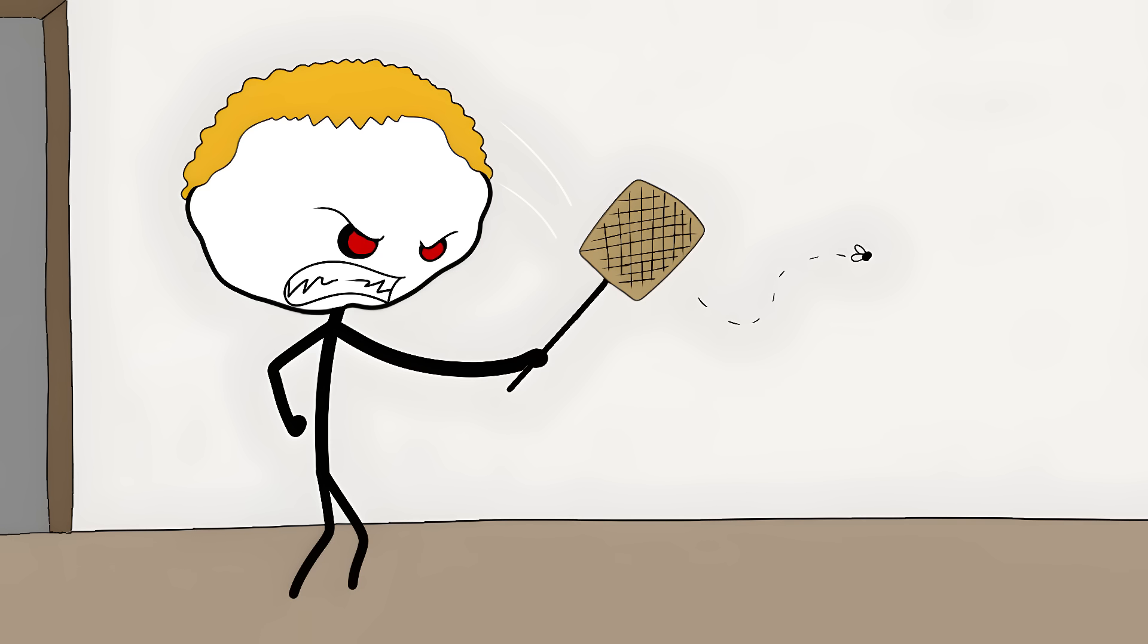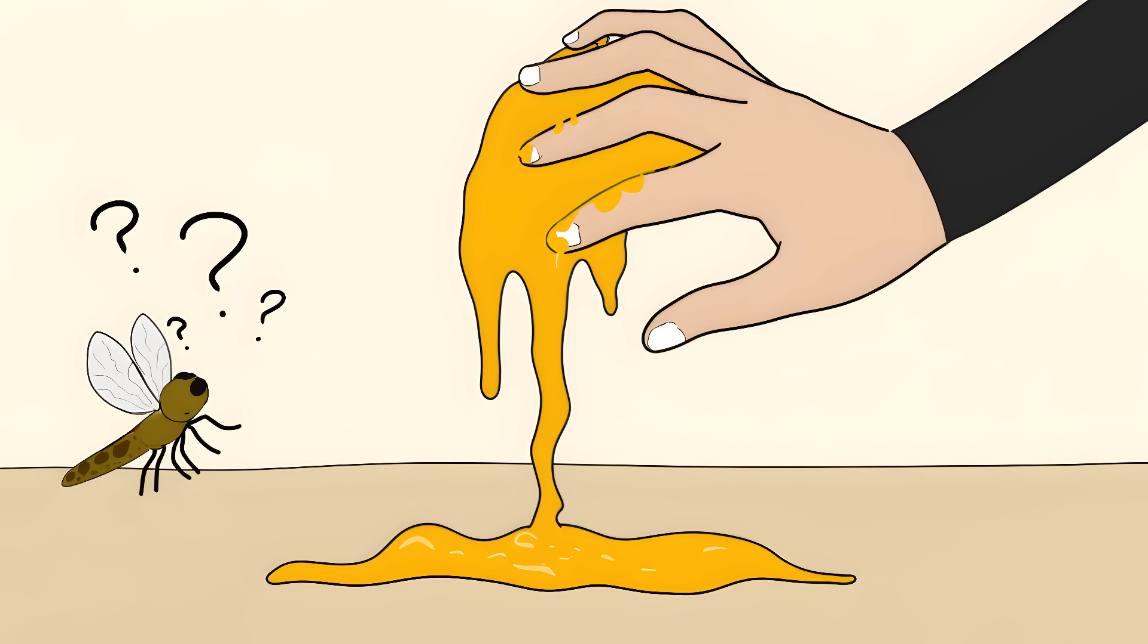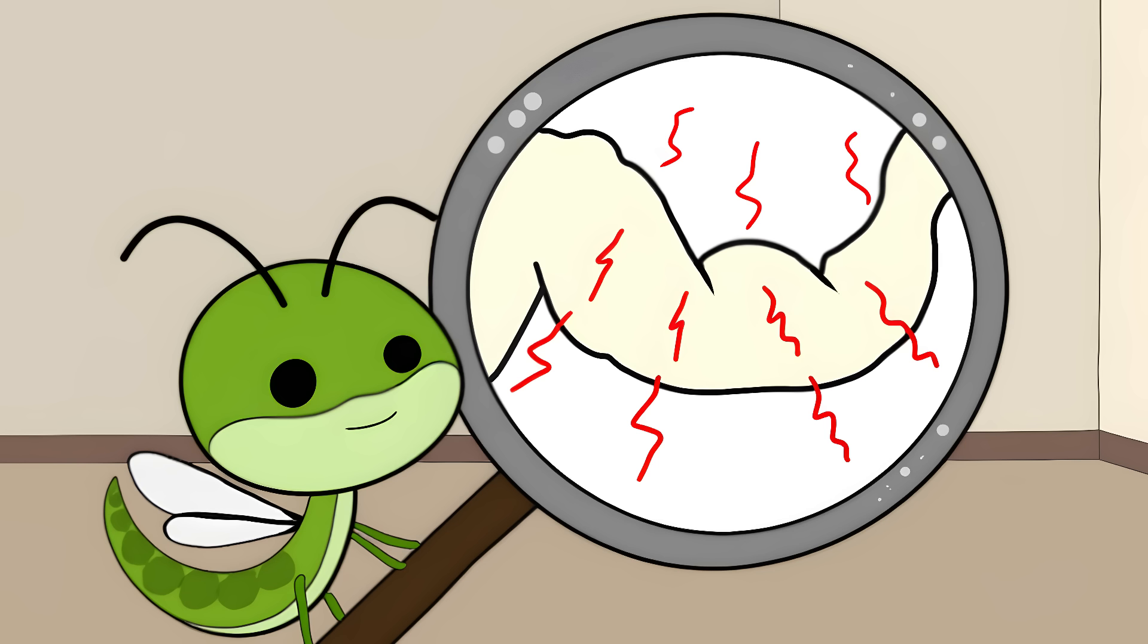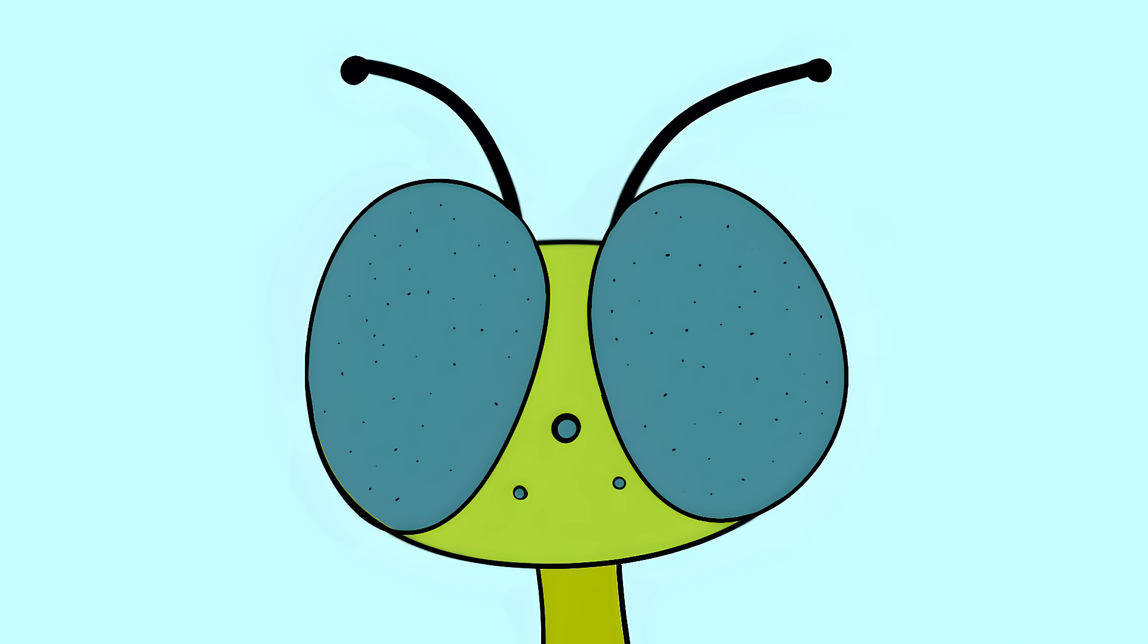When you try to swat a fly, you think you're being quick. But to them, your hand is moving through the air like it's stuck in honey. They can see every tiny movement, every slight twitch of your muscles before you even complete the action.